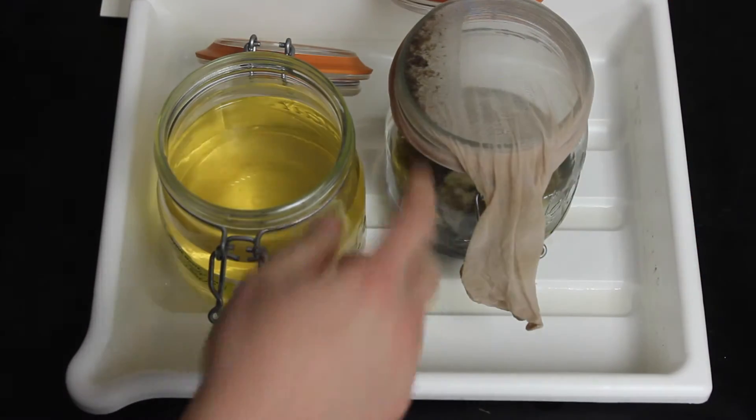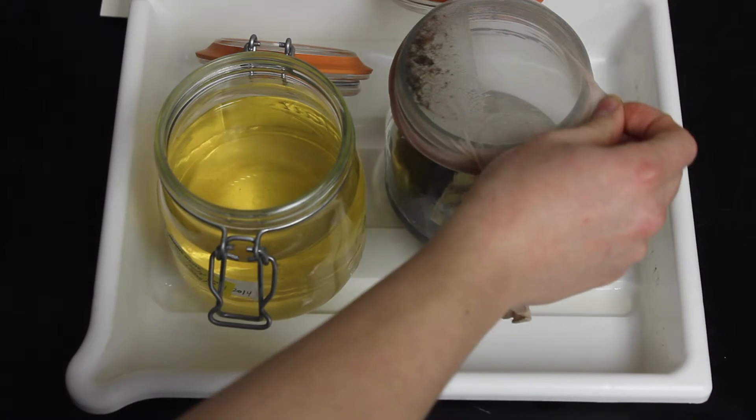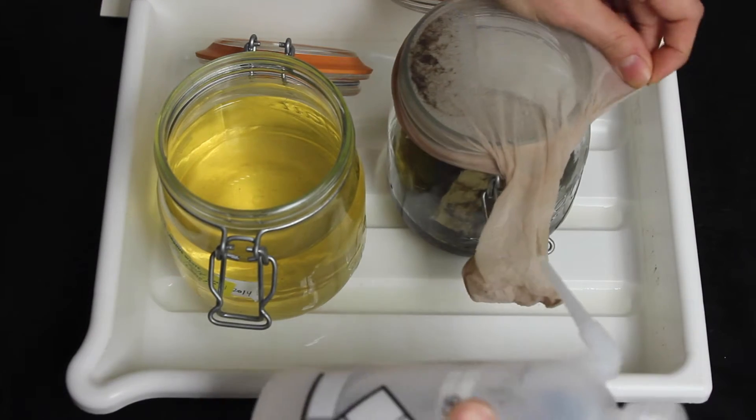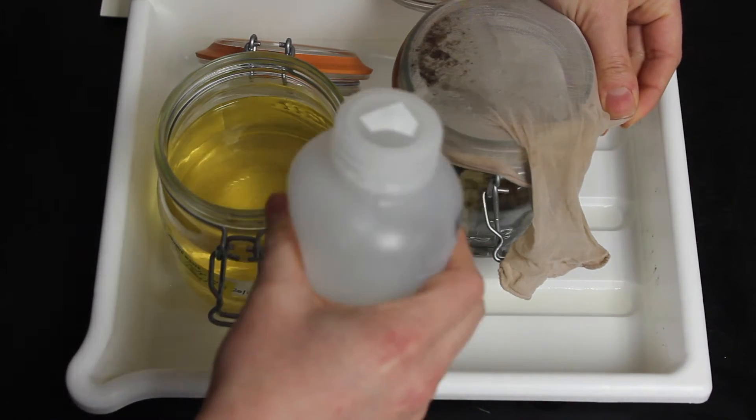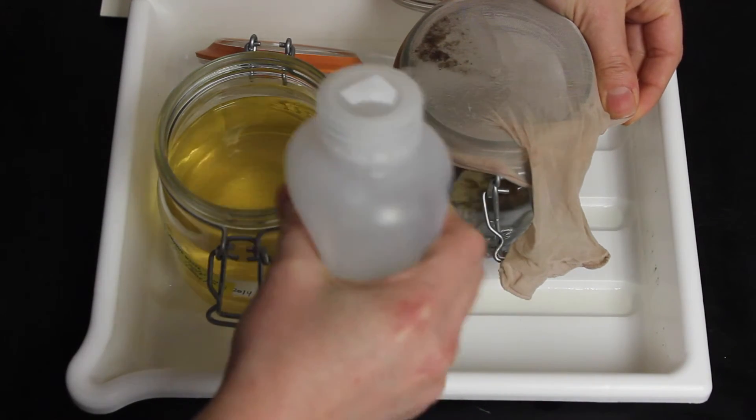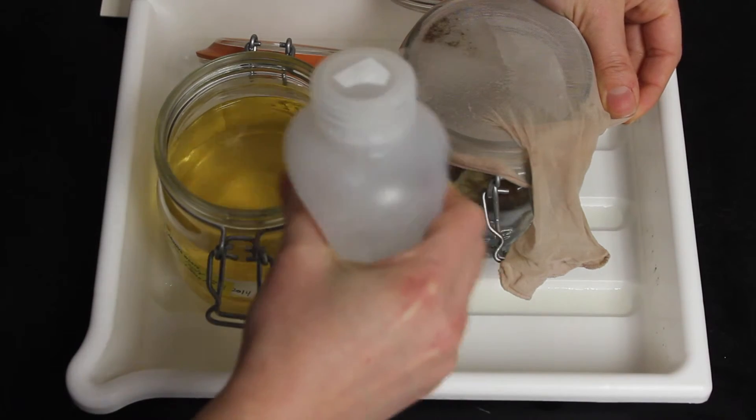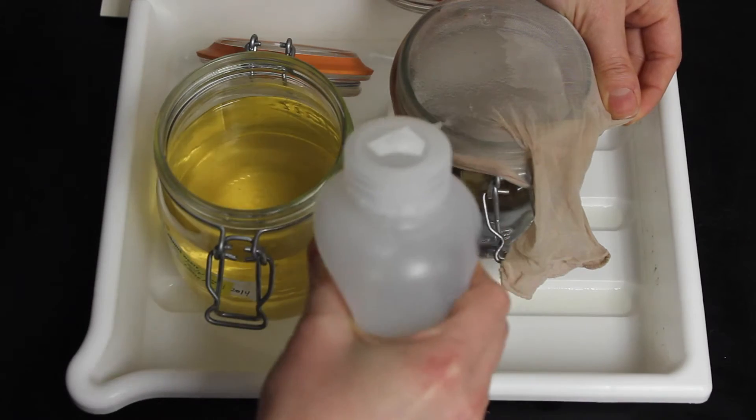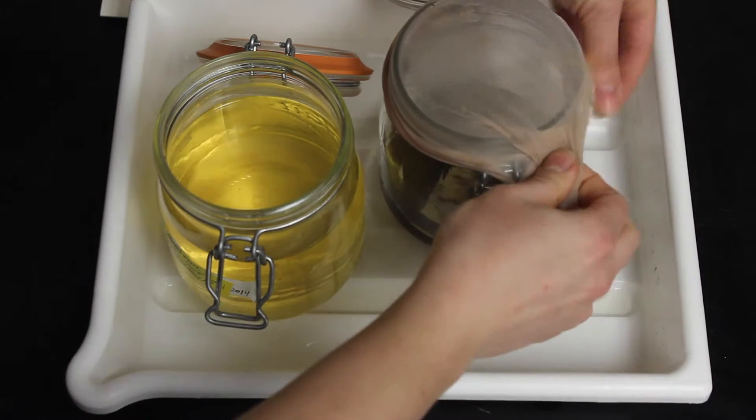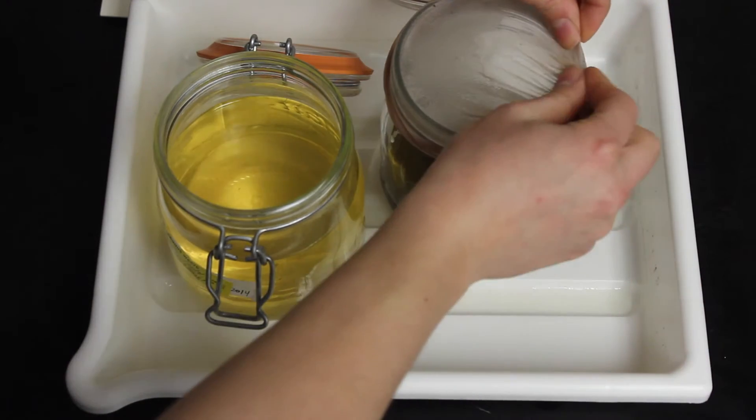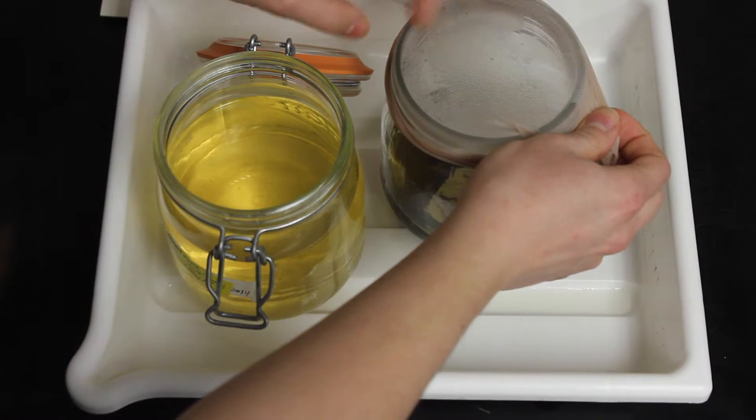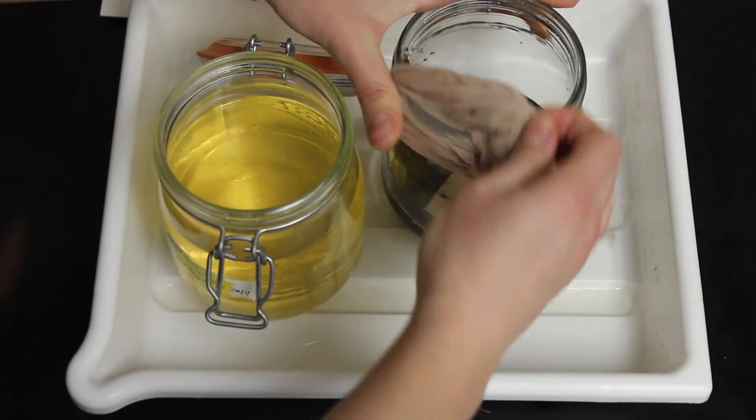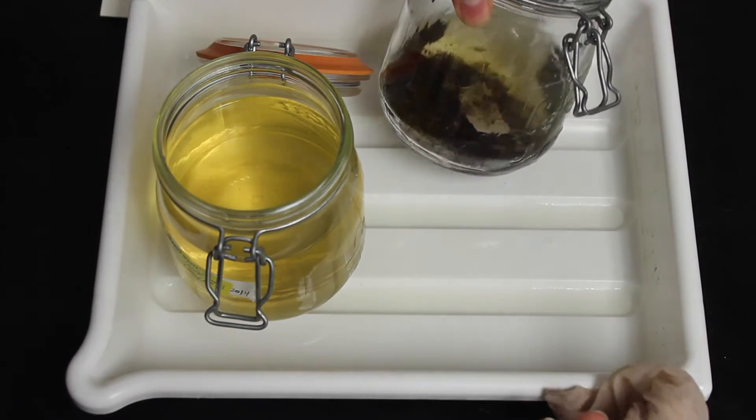But we're not done. Some of our organisms have stuck to the pantyhose. We're going to take our 95% ethanol and wash them off. Once you've made sure that there's nothing left on the pantyhose, you can take it off. And there you have it.